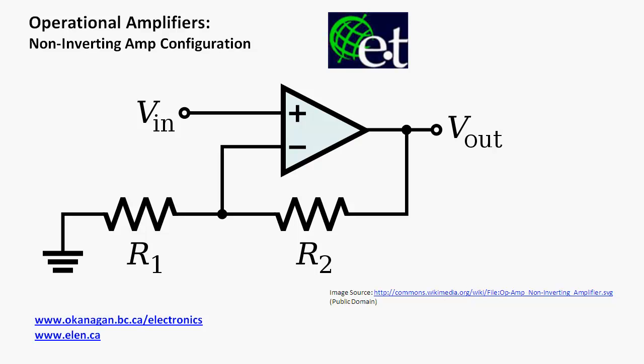In this video we're going to look at the non-inverting amplifier configuration for operational amplifiers. That configuration uses negative feedback from the output back into the inverting terminal of the input to control the overall voltage gain of the circuit. The overall voltage gain will be the ratio of V-out to V-in, and we'll find it's no longer dependent on the open-loop voltage gain of the op-amp — as long as that open-loop voltage gain is really big — and it's only going to depend on R2 and R1 values.